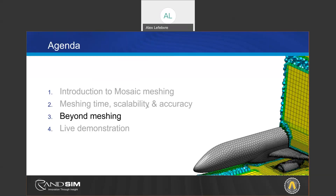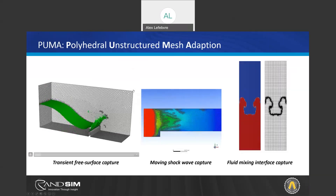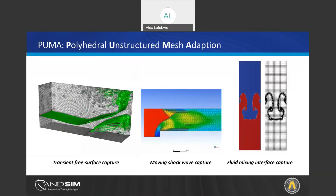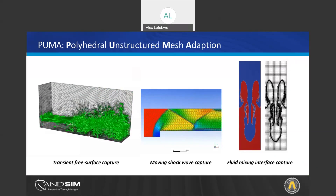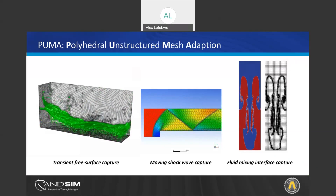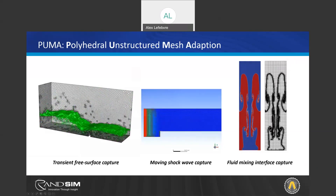Now that we have put numbers on meshing time, scalability, and accuracy, and quantified how much improvement the mosaic technology can have on your processes, let's look at what can be done once a geometry is meshed with the solver. One of the things you can do with a mesh — and I want to be clear this is not just for mosaic technology, but can be done with a mosaic technology mesh — is unstructured mesh adaptation.